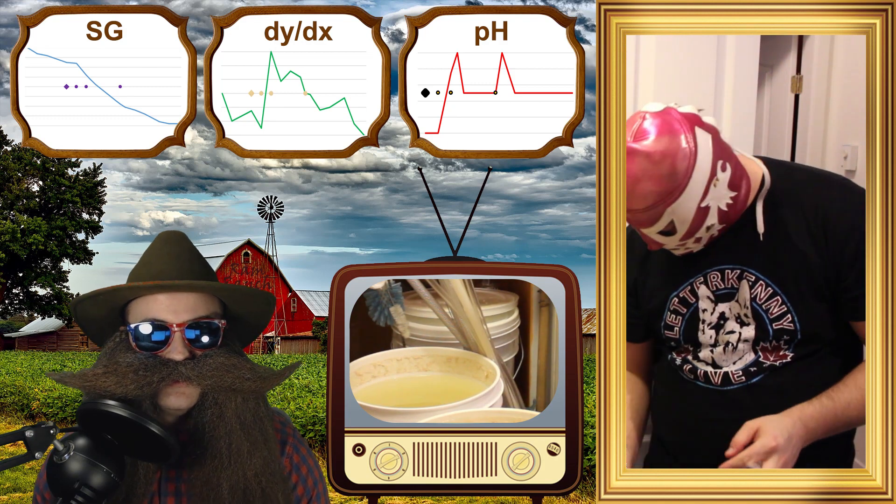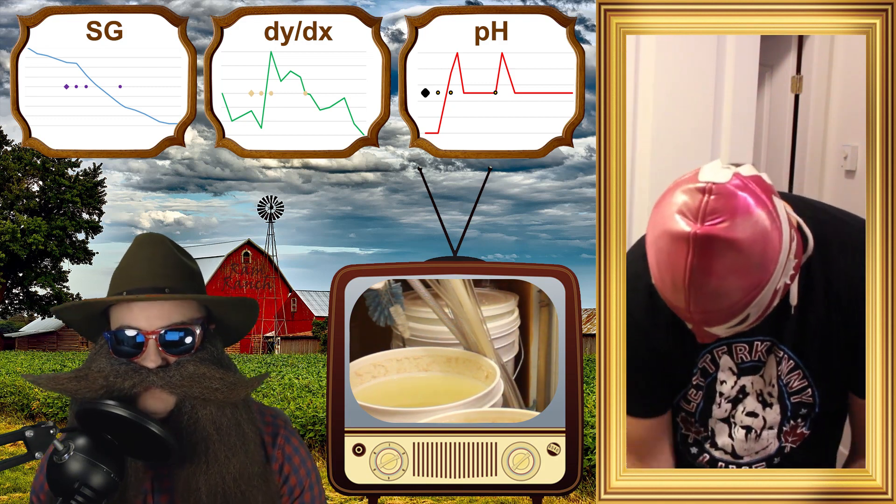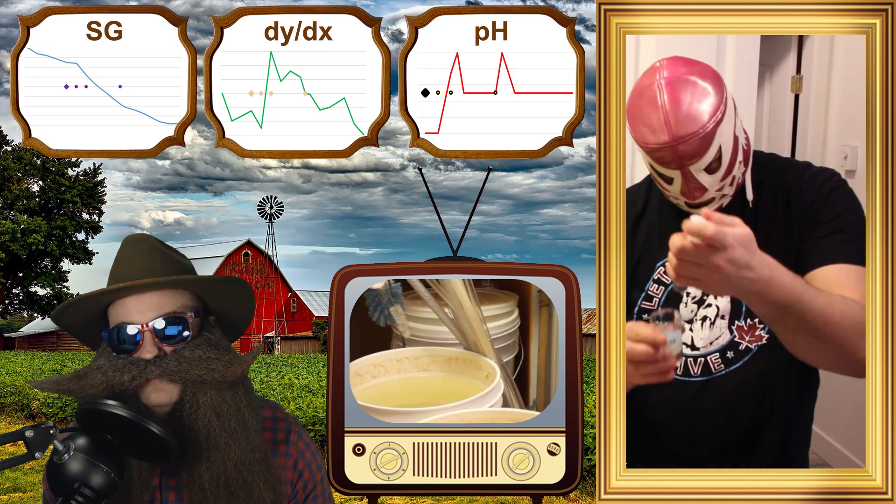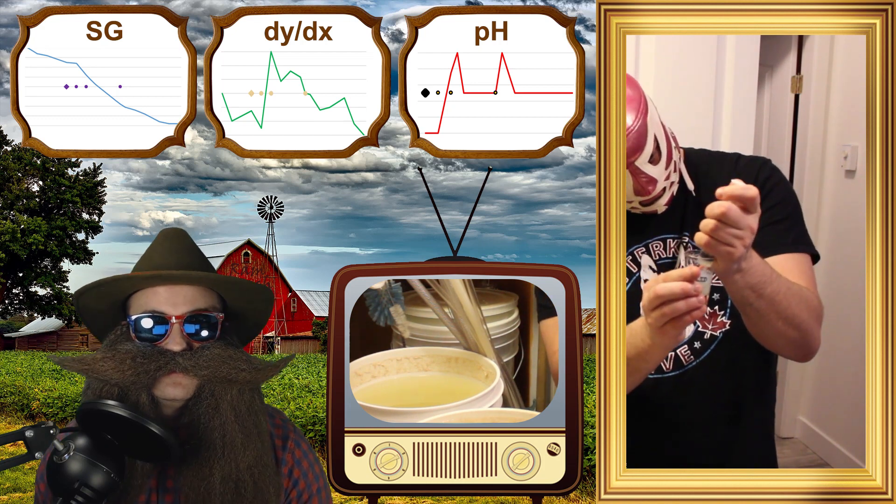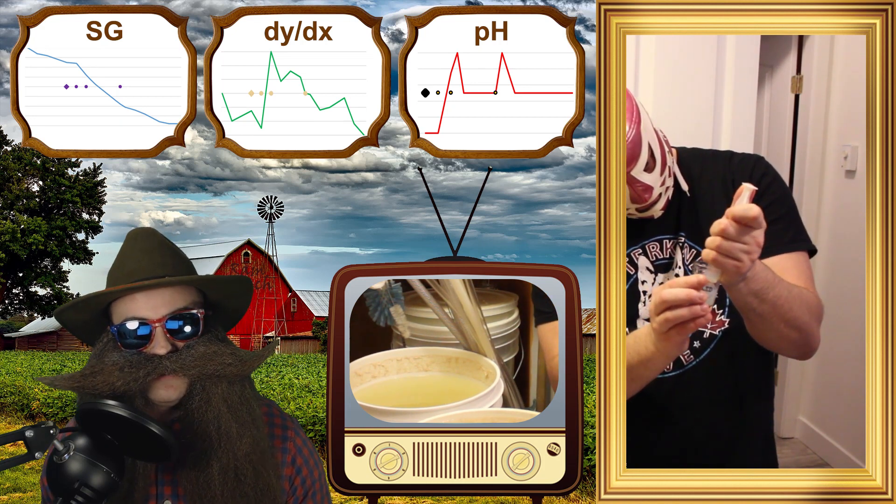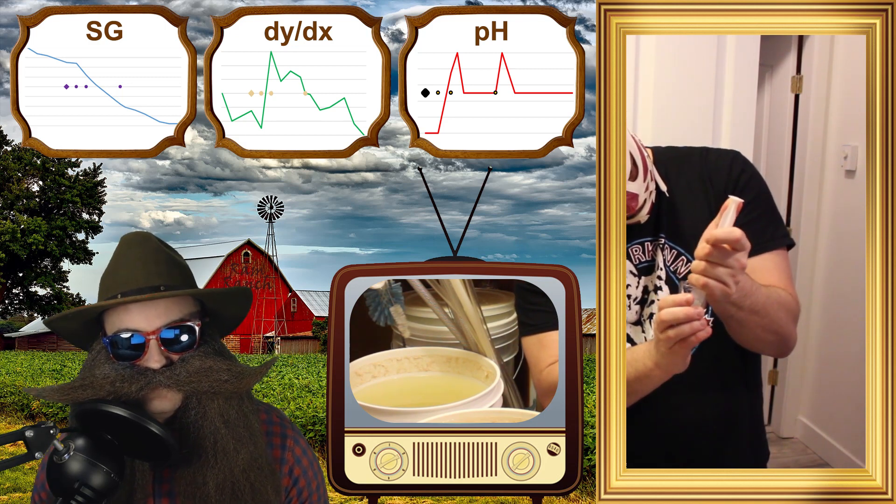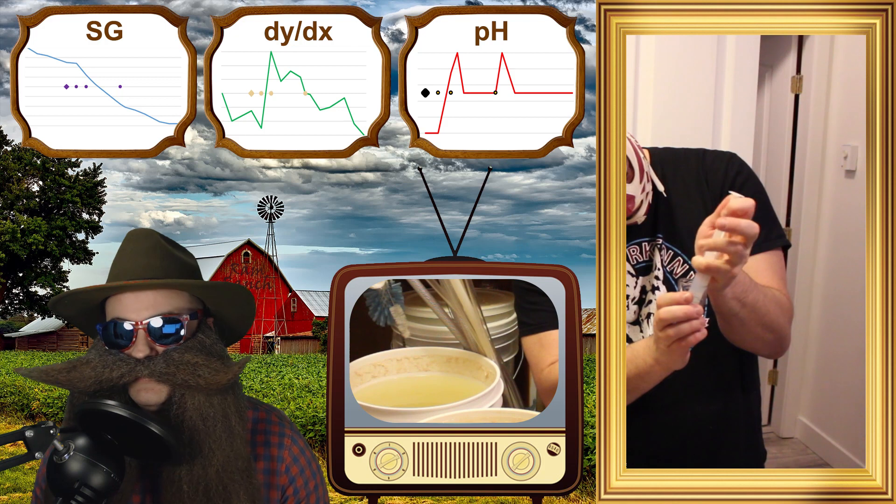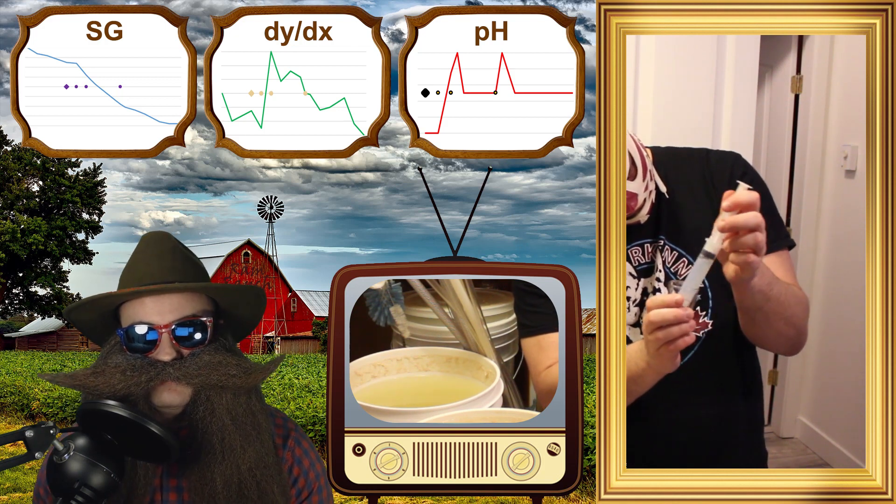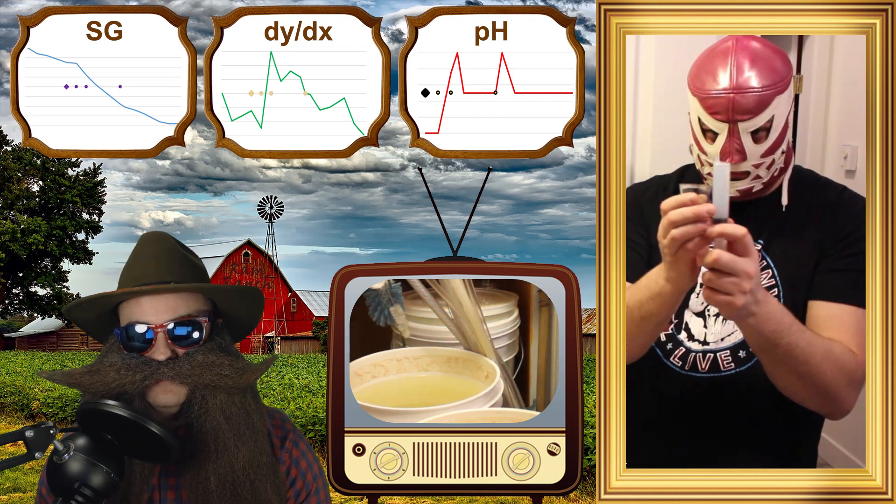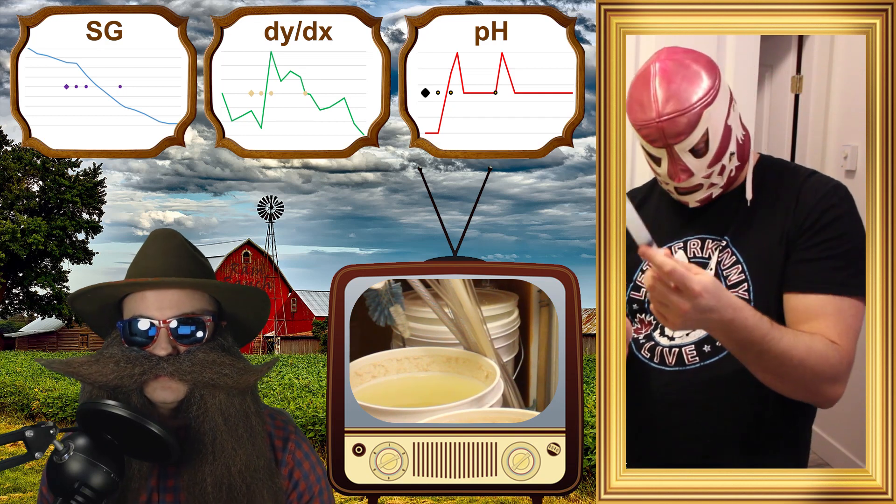The final steps in my fermentation process are to clear the wash using fining agents. My friend, Nacho Libre, will help us through this process. Nacho Libre is a simple man with a simple name, hoping he doesn't trigger any of your kids out there. We're all just trying to have a good time. This is a two-part fining process using Kieselsol and Chitosan.